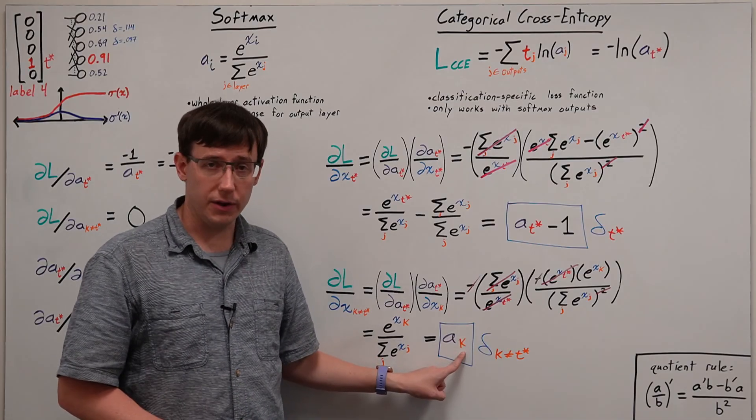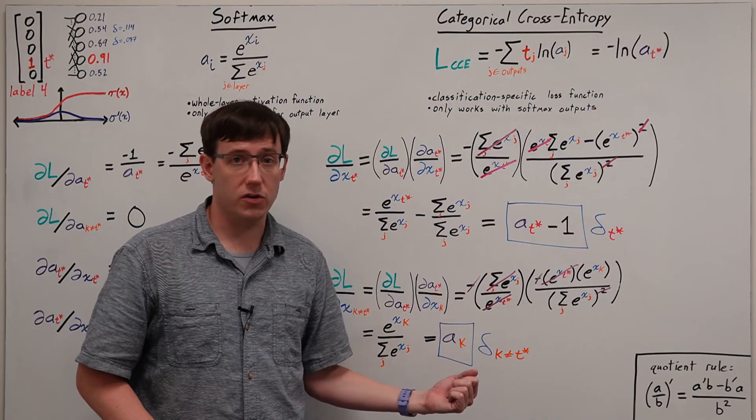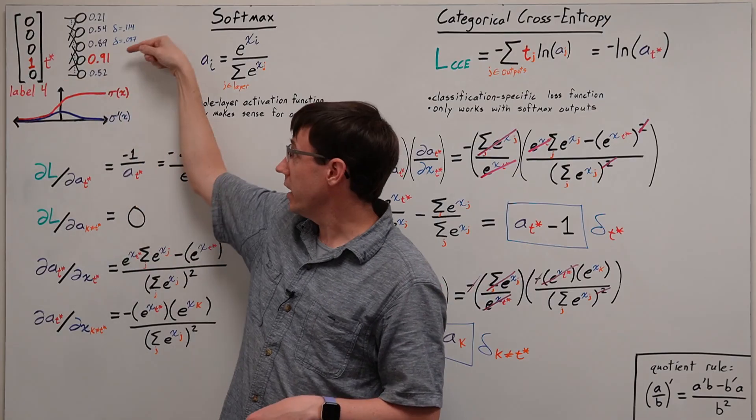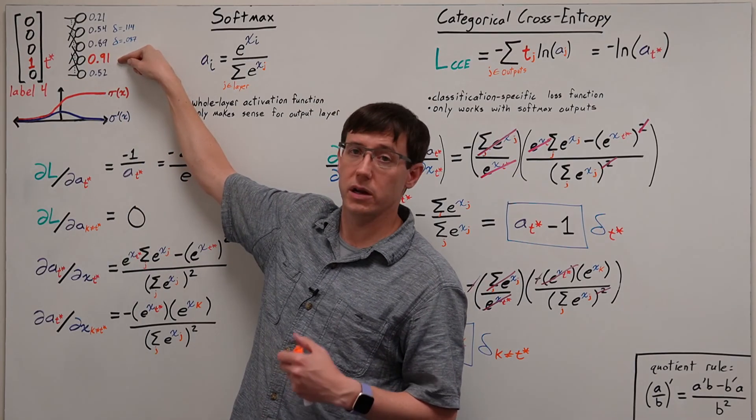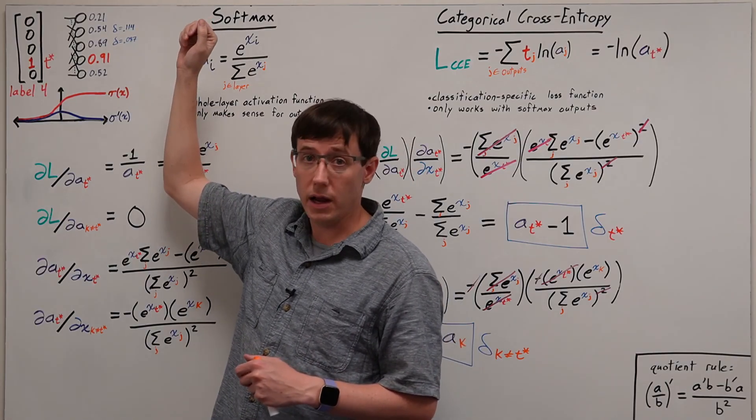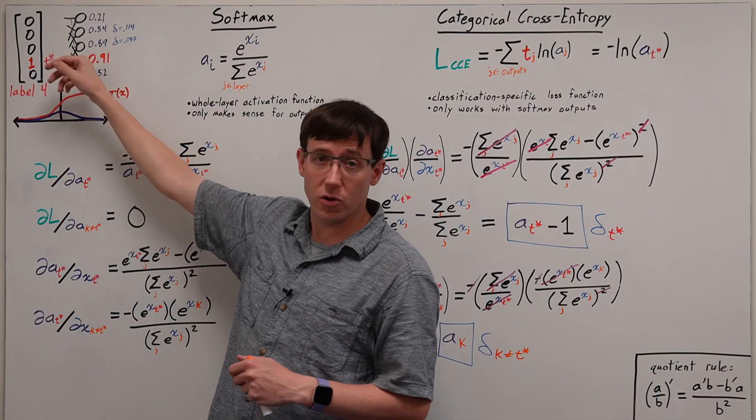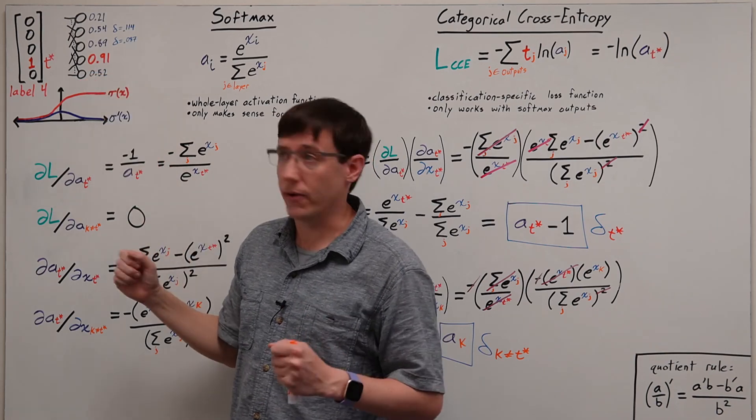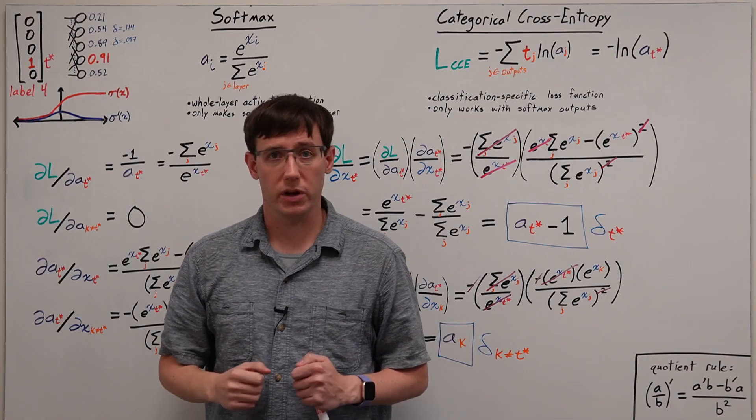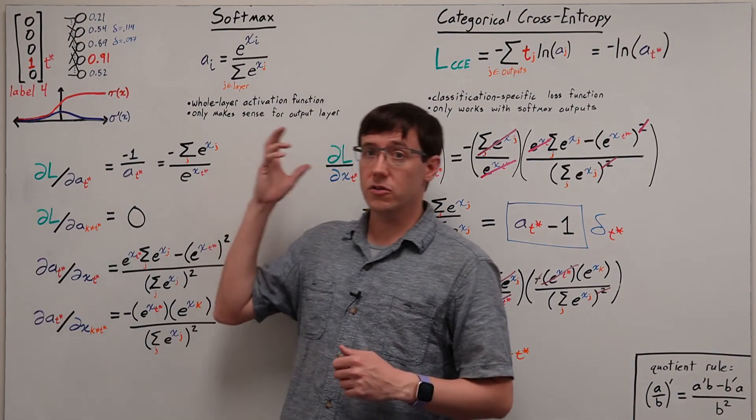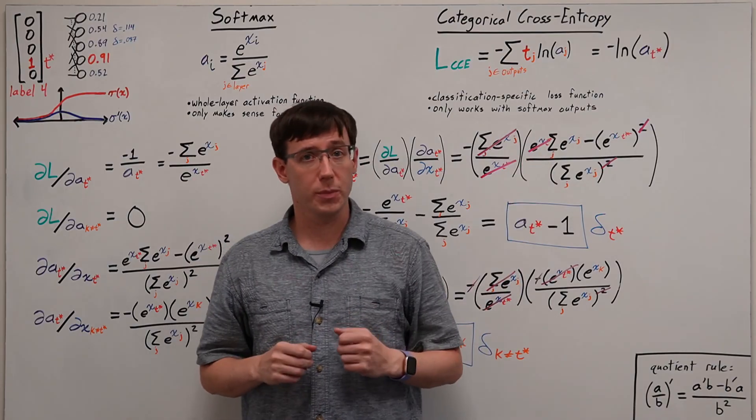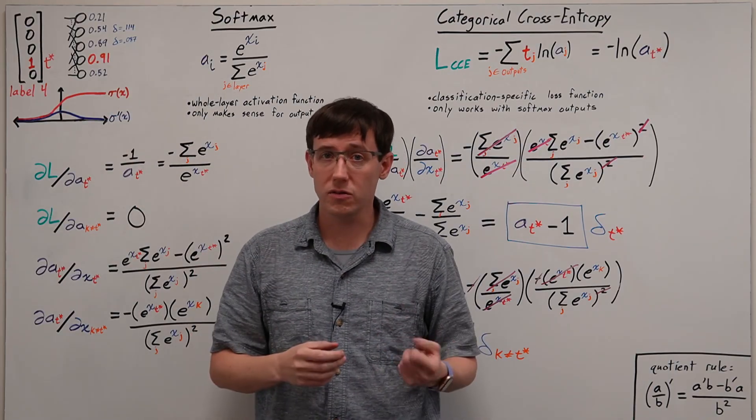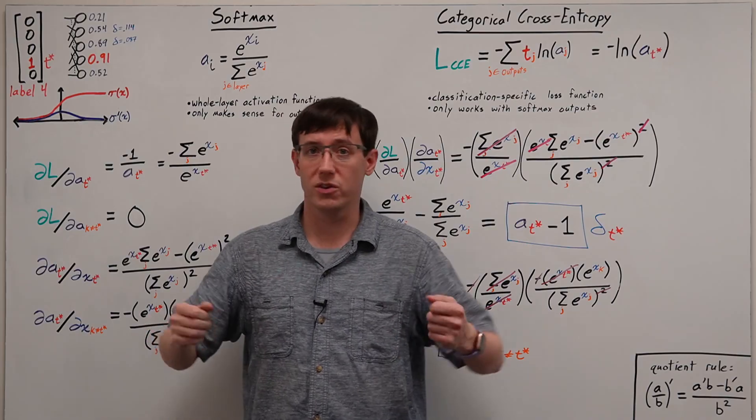While for the others where the output should be zero, we get a positive delta that gets smaller as the activation gets closer to zero. This means that when we take a step in the minus gradient direction, we will be increasing the activation where we need it to be one, and decreasing all of the others, and the amount that we change those activations by will be proportional to the size of the error that those neurons made in our most recent prediction. Which means that by combining softmax activations and categorical cross-entropy losses, we can get outputs that make a lot of sense for classification problems, and we can get gradients that will rapidly push those outputs towards the correct predictions.